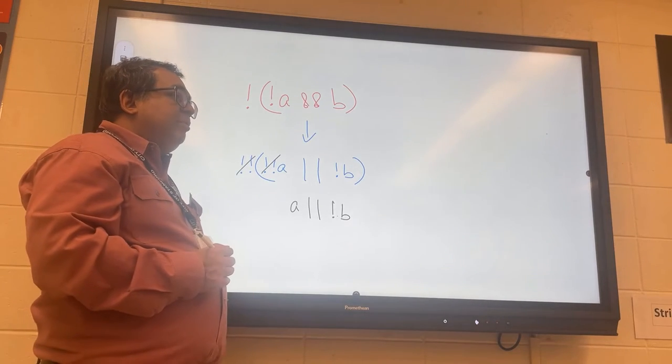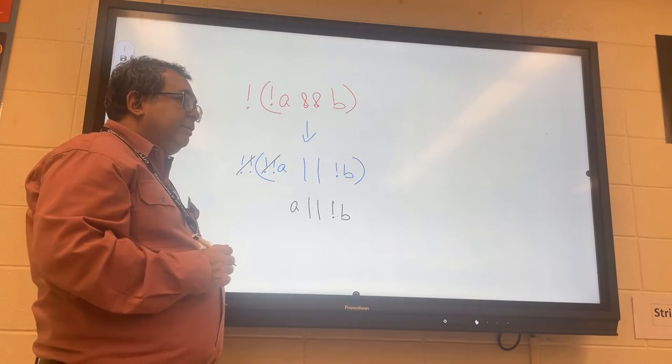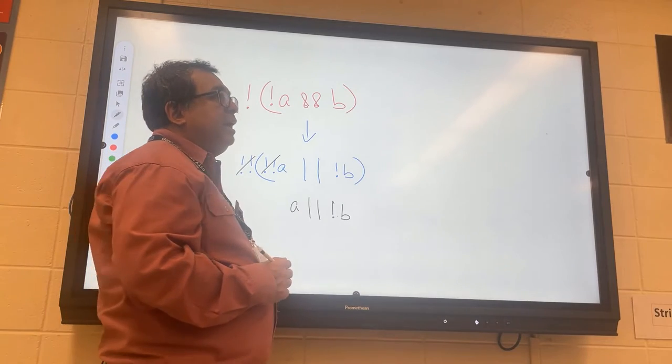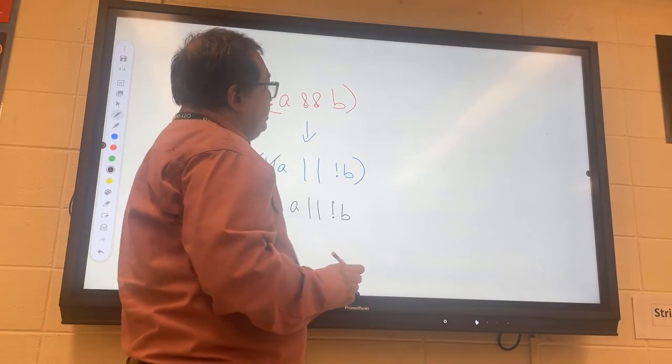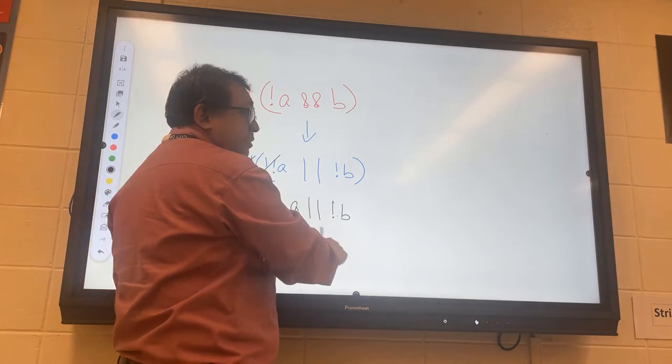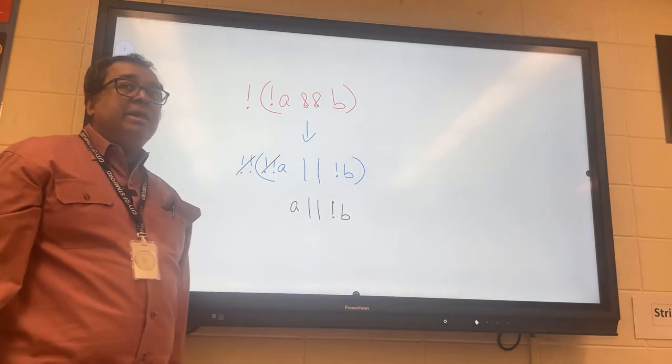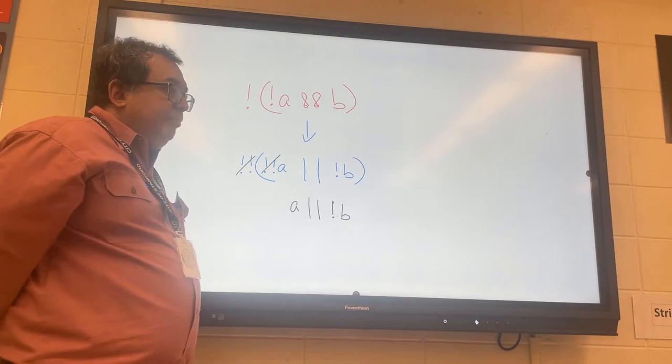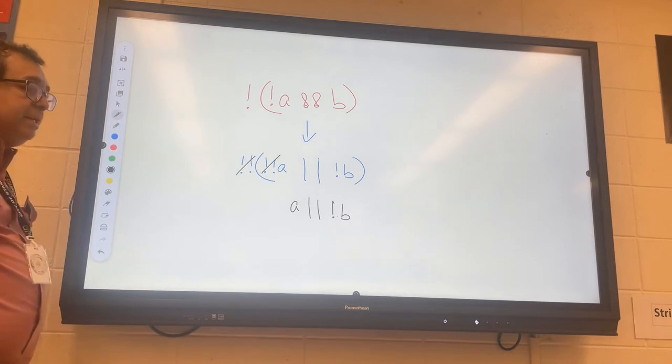That's right, you have to invert the output—that's part of De Morgan's Law. So what I'd like you to do now is draw the truth table for the red expression and then draw the truth table for the black expression. Please do that now.